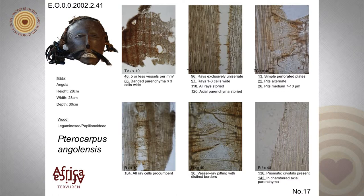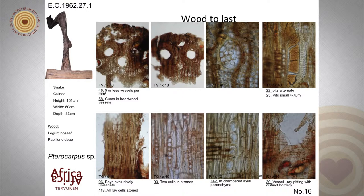Sometimes the color is not very stable, and this is not the real redwood that originally comes from other species of the same genus. This is another object — a baga snake, very typical sculptures for the Baga tribe. Most of these snakes are sculpted in Pterocarpus, not angulensis, but probably Pterocarpus tinctorius or Pterocarpus soyauxii, commercially traded as padauk wood.